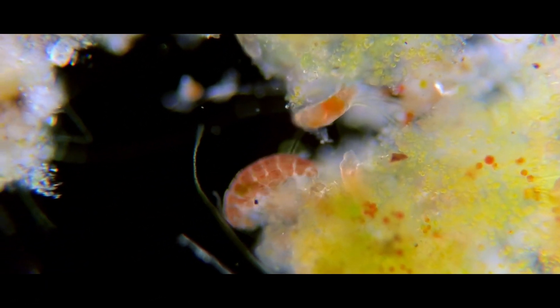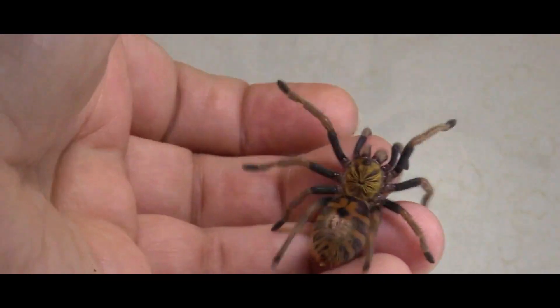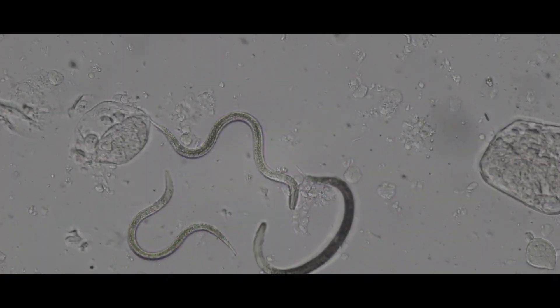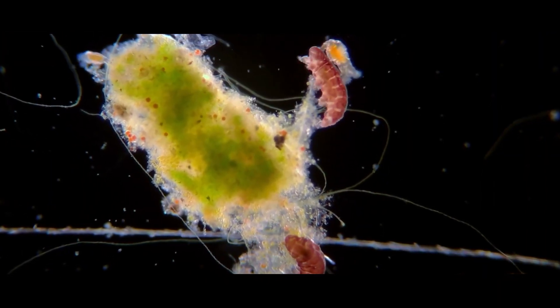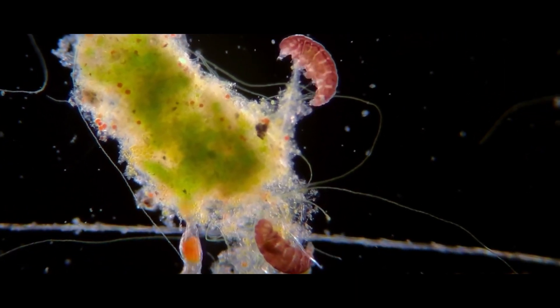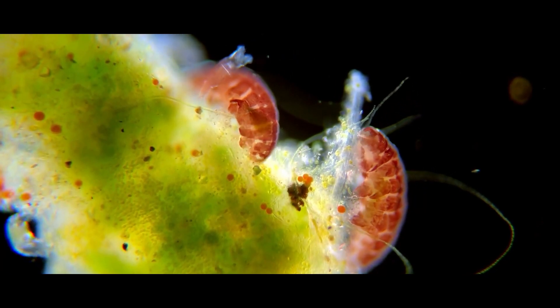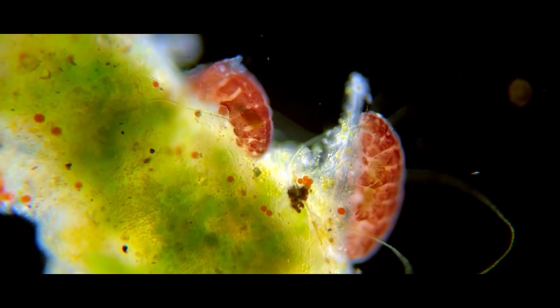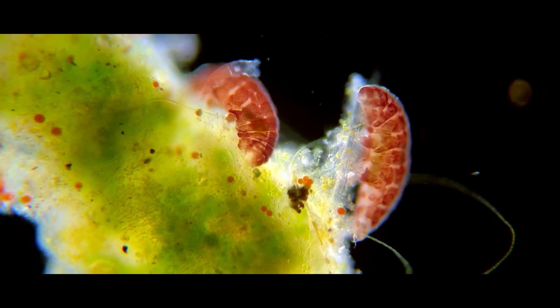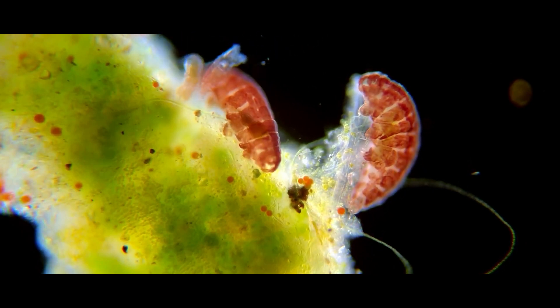They are related to most other creepy crawlies who shed their exoskeletons in order to grow - the insects, myriapods, crustaceans, arachnids, onychophorans and nematodes - but comprise their own phylum of over 1,300 known species ranging from 0.1 millimeters to 1.5 millimeters in length. Each year plenty of discoveries are made about these cute little bags of water, so here are 10 of the most important and coolest ones of the last year.